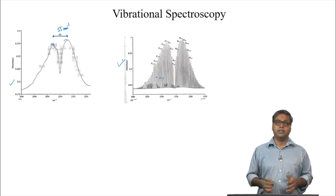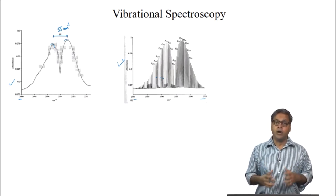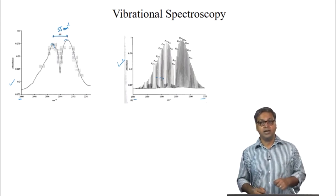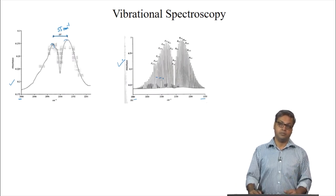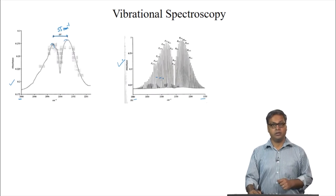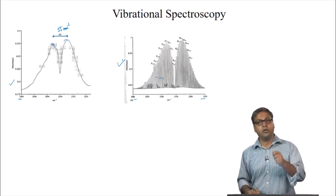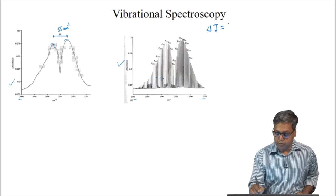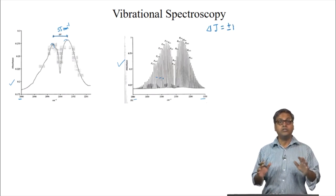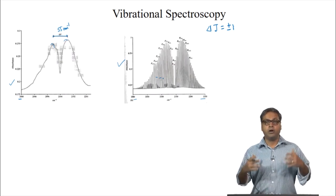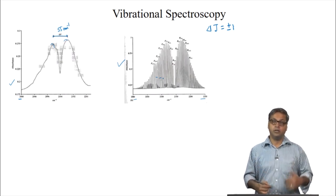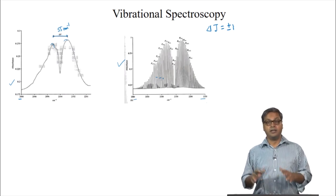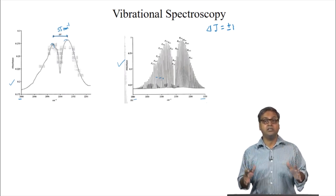We can guess that this structure is due to the rotational structure of the molecule. The molecules are not only vibrating but they are rotating as well, so they have rotational energy in addition to vibrational energy. When we excite a vibration, we need to change the rotational energy of the molecule. In other words, the rotational selection rule given by delta J equals plus or minus 1 still needs to be adhered to. We have to conserve angular momentum during a transition, and we cannot conserve angular momentum with a pure vibrational transition that does not change the rotational state.